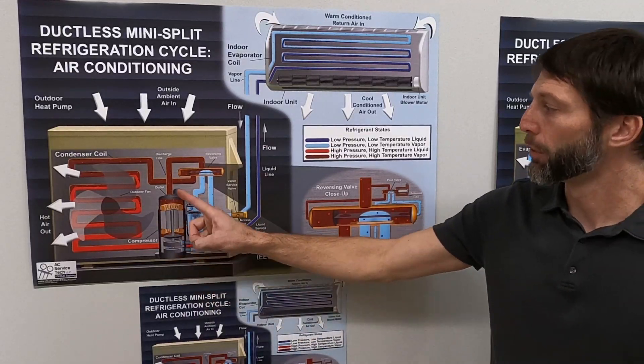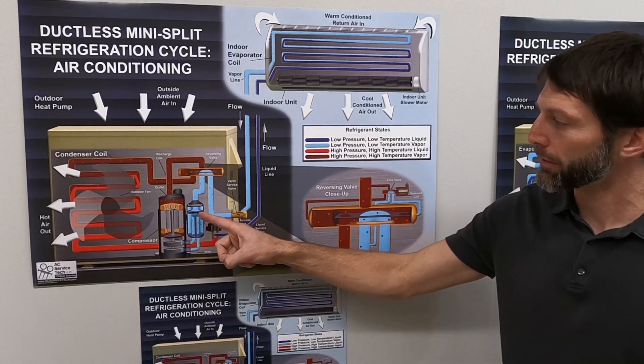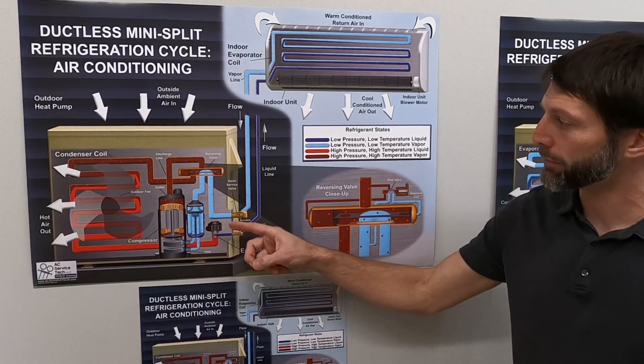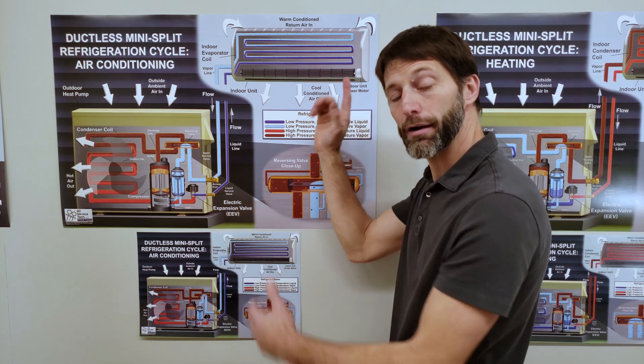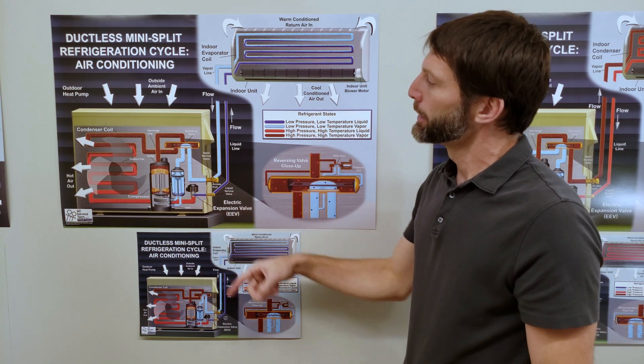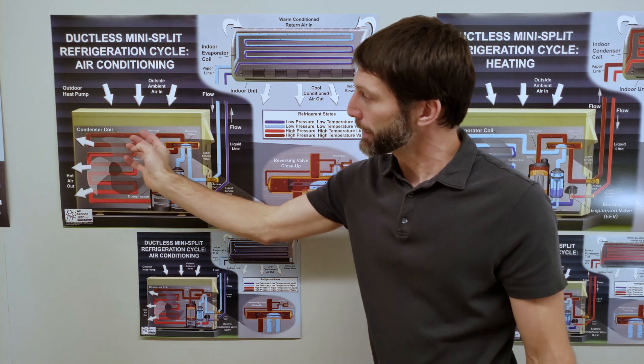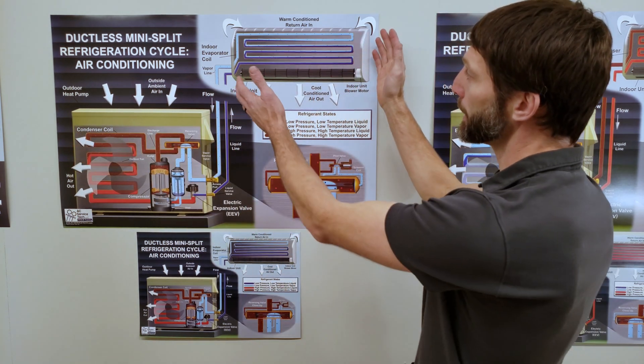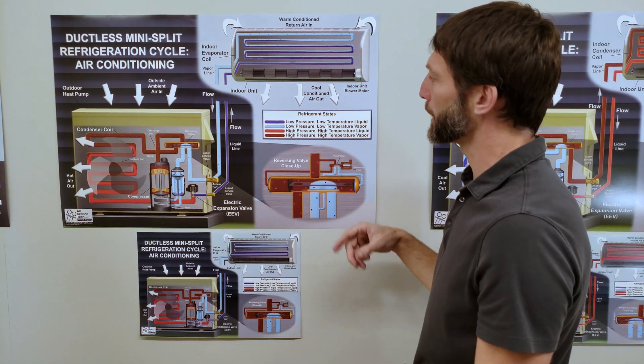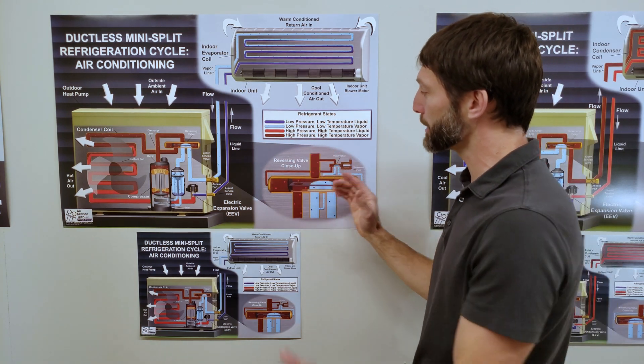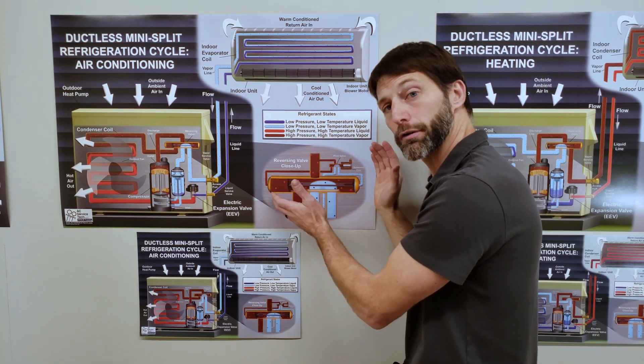Right here you have the ductless mini split refrigeration cycle in air conditioning mode. You have your rotary compressor and your accumulator. You have your EEV metering device. You don't have two metering devices here, you have one and it's located in the outdoor unit. You are rejecting the heat outside and absorbing the heat inside into the refrigerant. You can once again see your refrigerant state and you have a close up view of the reversing valve.